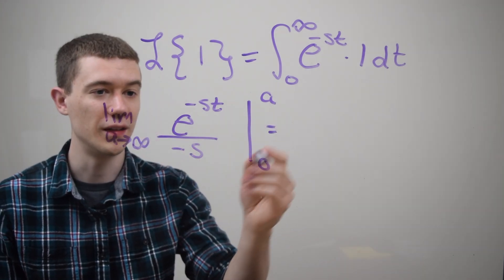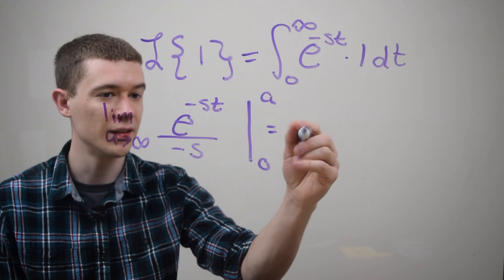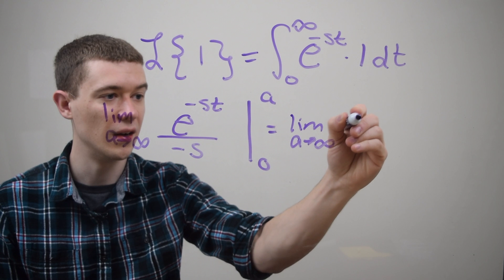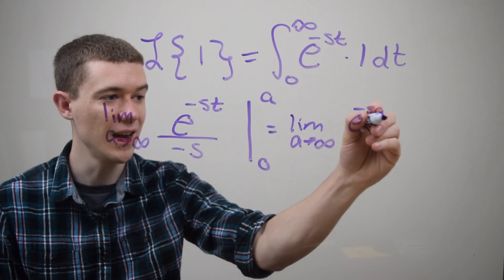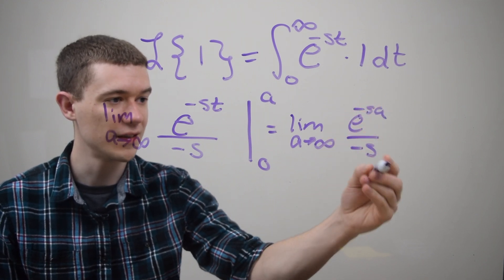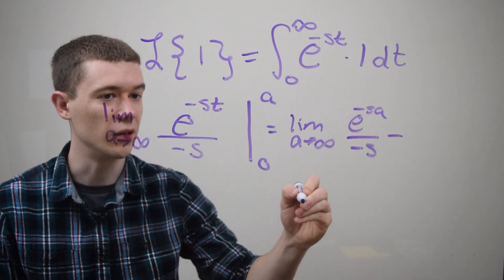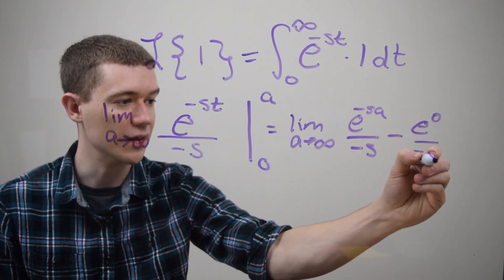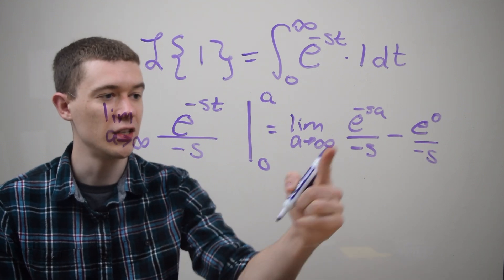So if I evaluate this using the fundamental theorem of calculus, this would be the limit as a goes to infinity of e to the minus sa over minus s, minus plug in the lower limit, that would be e to the 0 over minus s, and so now I just need to take this limit.